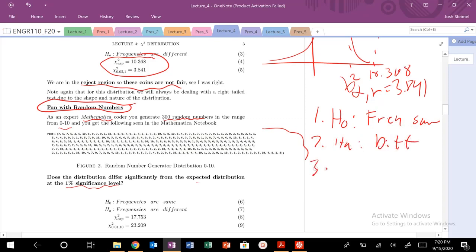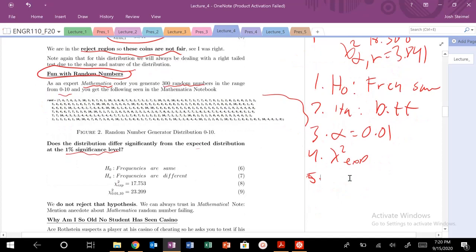What's my confidence interval? Well, 1% significance, so alpha equals 0.01. What's my chi-squared experimental? I need to calculate that.